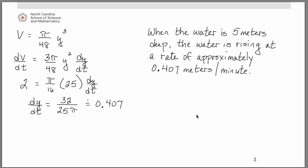So we would have as our final conclusion that when the water is 5 meters deep the water level is rising at a rate of approximately 0.407 meters per minute. Now remember the units of measure.